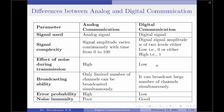The next parameter is the broadcasting ability. In analog communication, only a very limited number of channels can be broadcasted simultaneously, whereas in digital communication a large number of channels can be simultaneously broadcasted.